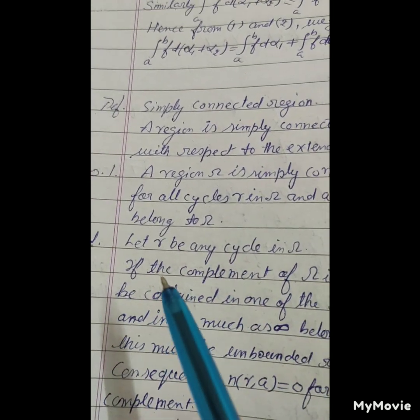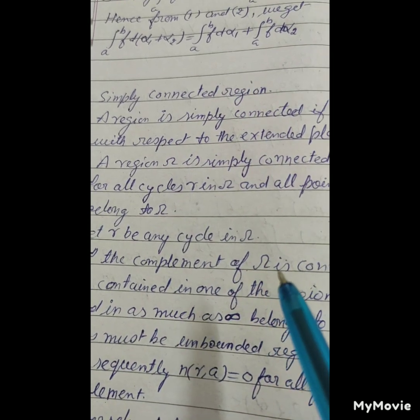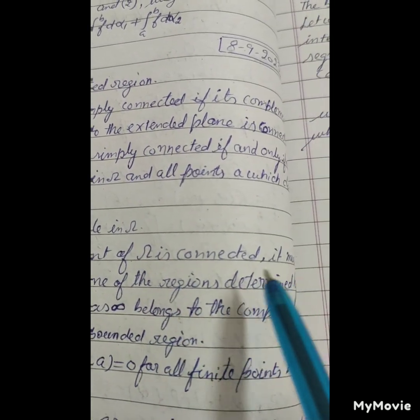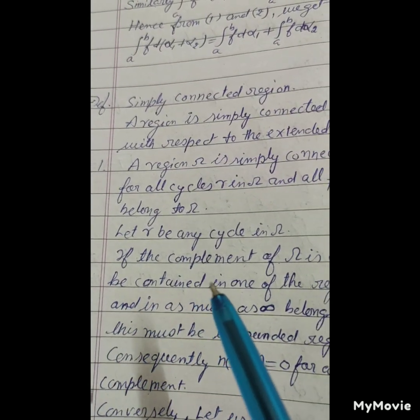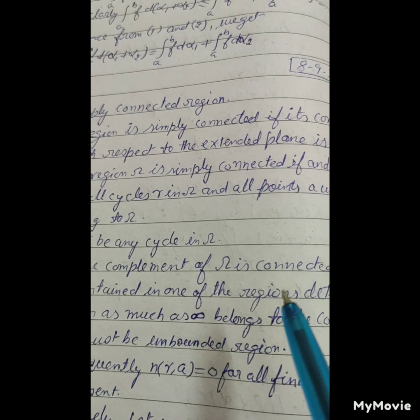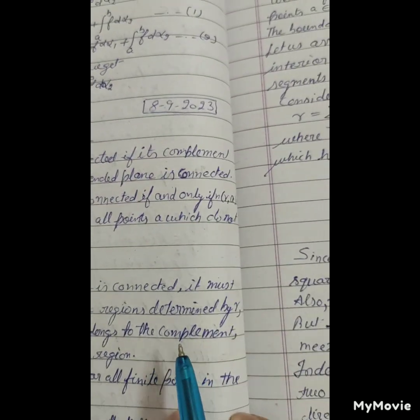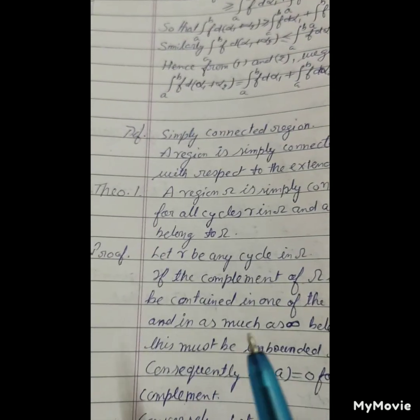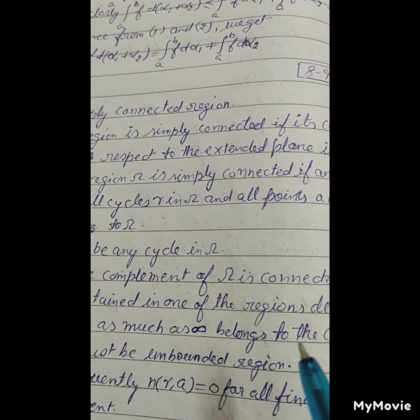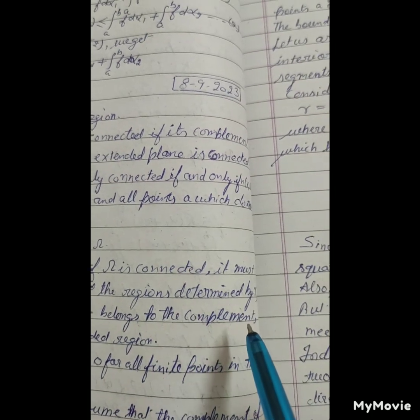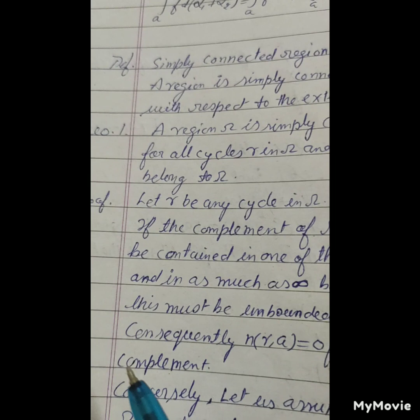Proof: Let gamma be any cycle of omega. If the complement of omega is connected, it must be contained in one of the regions determined by gamma.